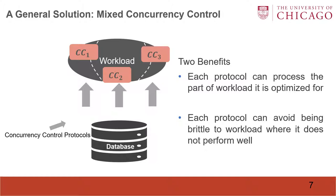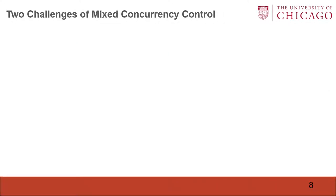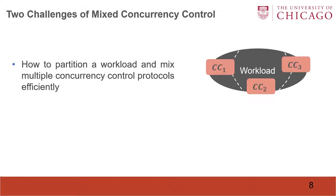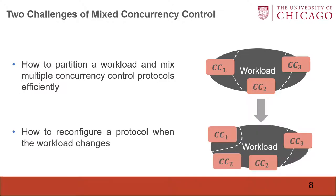It has two benefits. First, each protocol can process the part of workload it is optimized for. Second, each protocol can avoid being brittle to workloads where it does not perform well. There are two challenges of mixed concurrency control: first, how to partition a workload and mix multiple protocols efficiently; second, how to reconfigure a protocol when the workload changes.